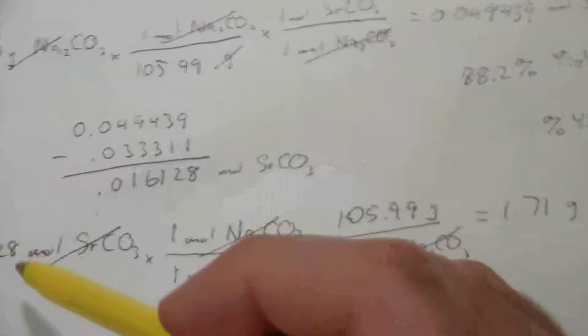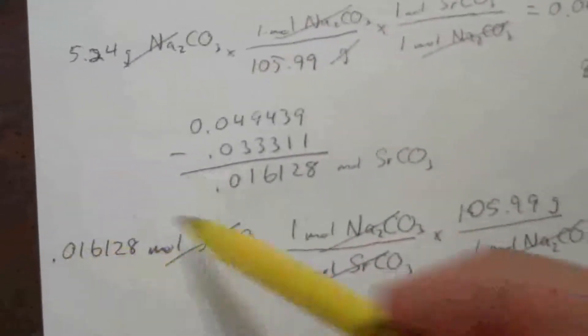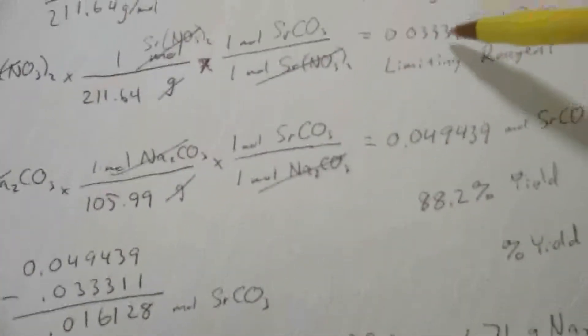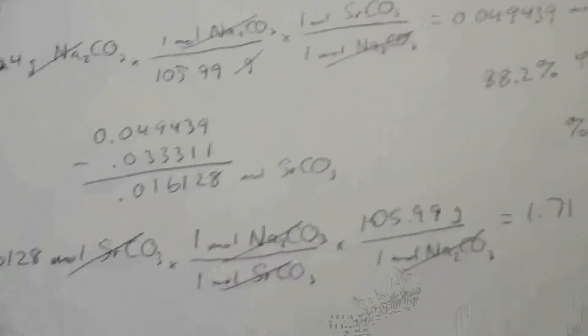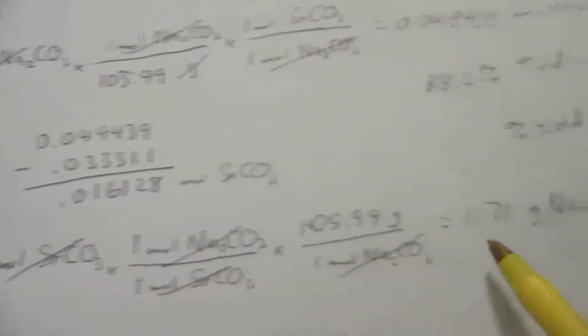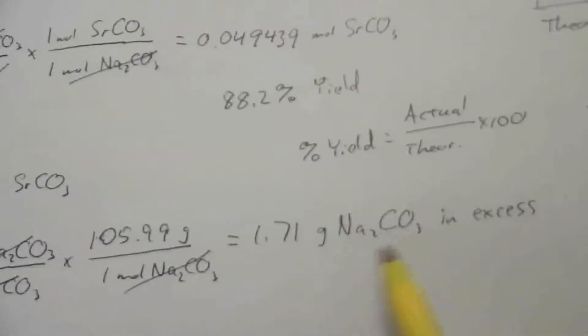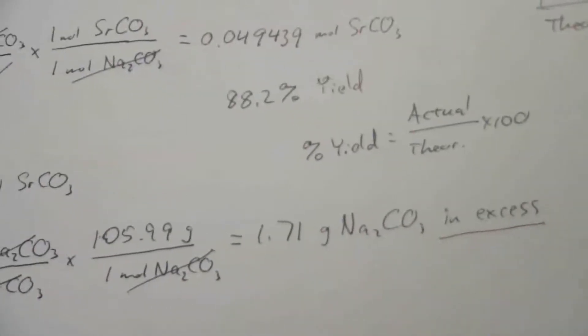So, this is another type of problem where you might have to find the amount in excess. You can do that just by working backwards from that difference in moles between the limiting reagent and the reagent in excess. Start with that, convert back to grams, and that tells you how much is in excess.